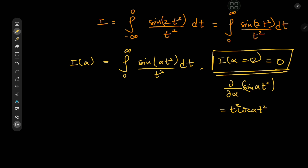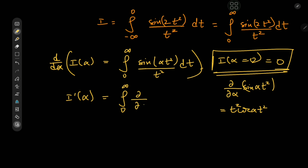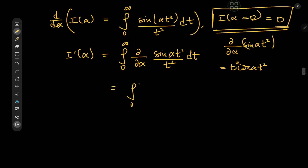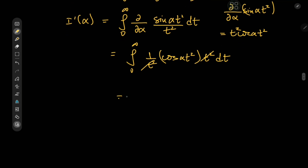So now we differentiate with respect to α. We have I prime of α, and on the right-hand side, switching the order of integration and differentiation, we take the partial derivative with respect to α of sine of α t squared divided by t squared dt. This gives us the integral from zero to infinity of one over t squared times cosine α t squared times t squared, with lovely cancellation, giving us the integral from zero to infinity of cosine α t squared dt.